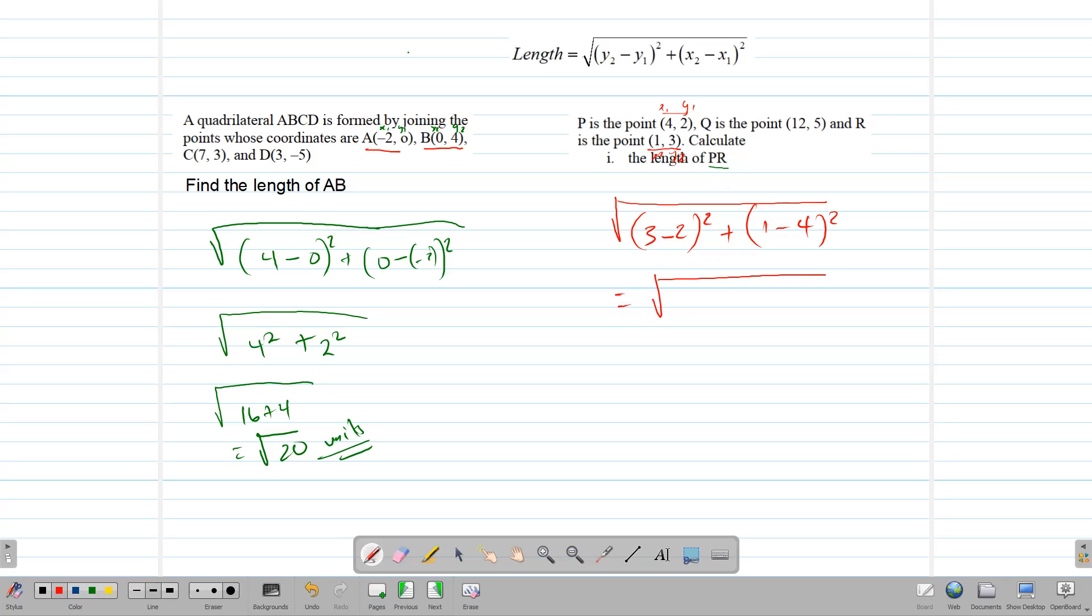All right, now that we have that, we can proceed with it. So 3, take away 2, square, and 1, take away 4, square for the x's. 3, take away 2 is 1. So you have 1, square, plus negative 3, square, which gives us the square root of 1, plus 9, which gives us the root of 10.